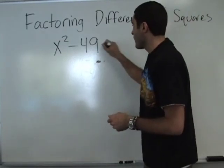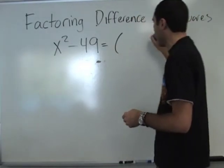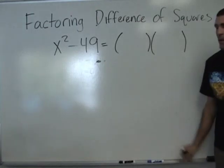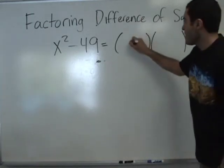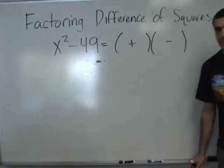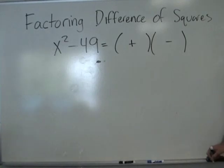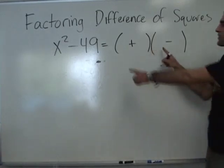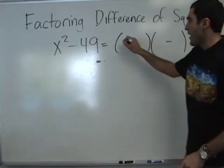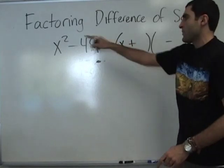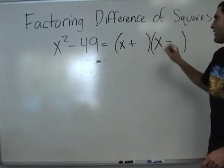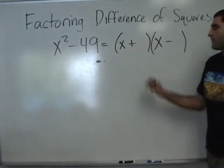Difference of squares follows this format — plus, minus. The first term: what times what makes X squared? X times X. And then 7 and 7.